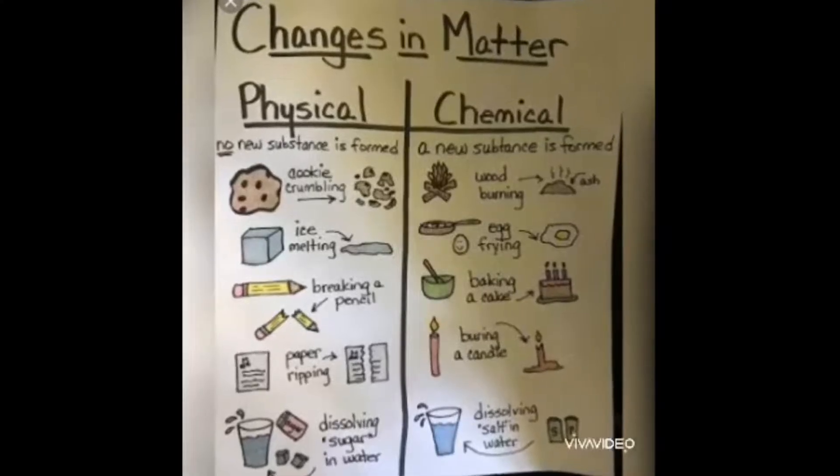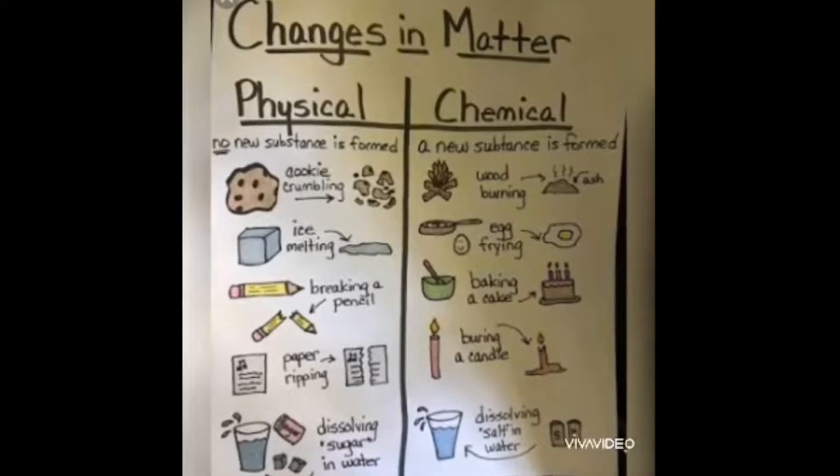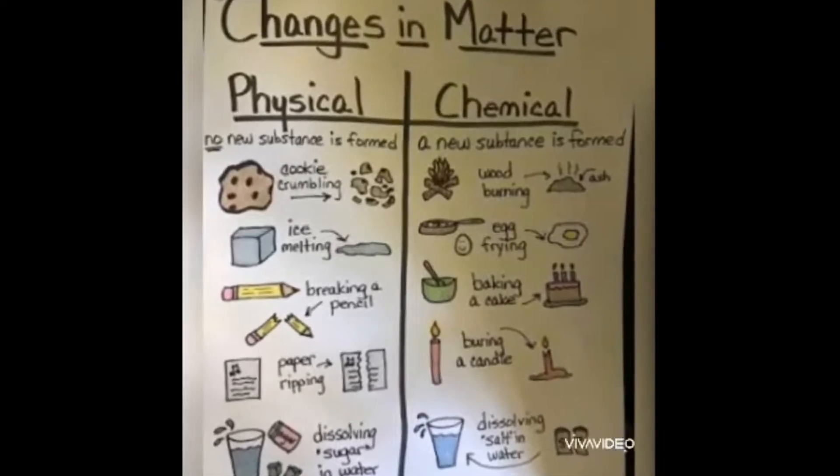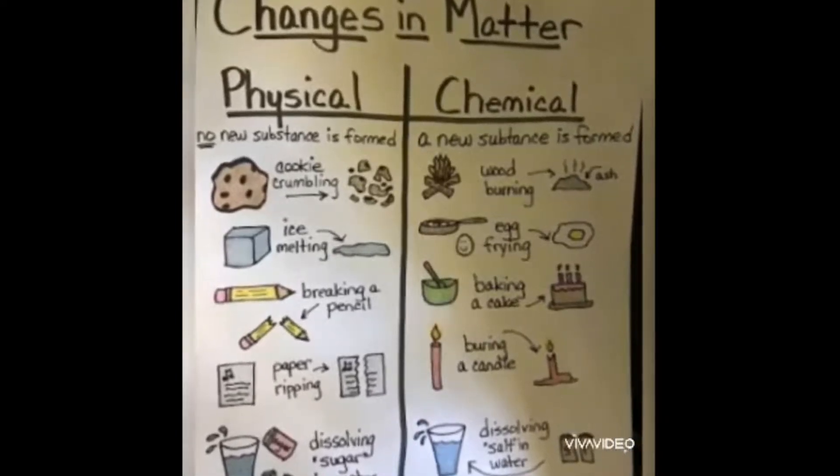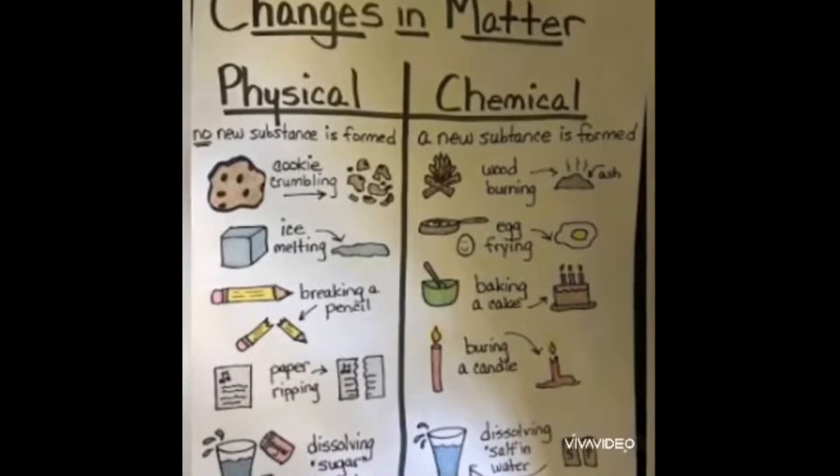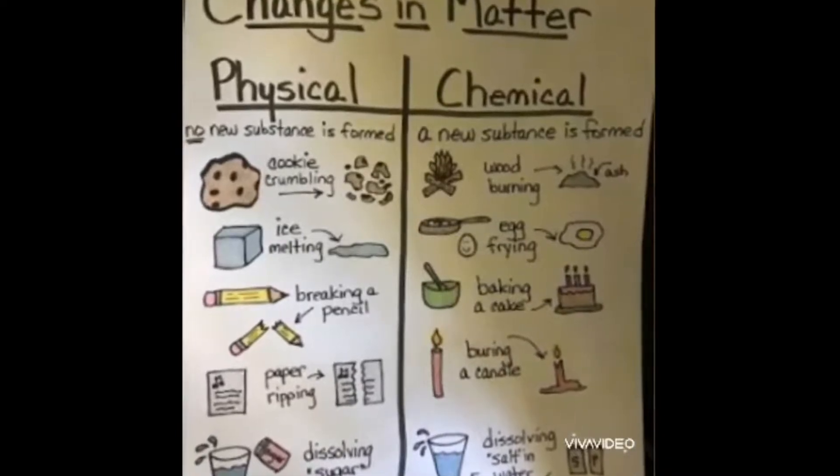Putting an end to today's topic: physical changes are where no new substance is formed, and chemical changes are where a new substance is formed. Go through the examples in the sheet. Thank you for watching the video, kids. This was our last video. Tomorrow, back questions and exercises will be uploaded on the school website — please copy from there and do it in your notes.